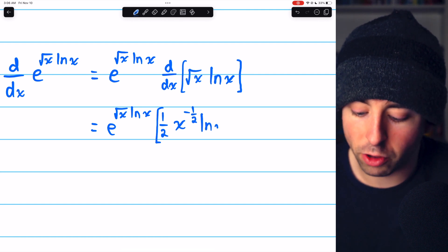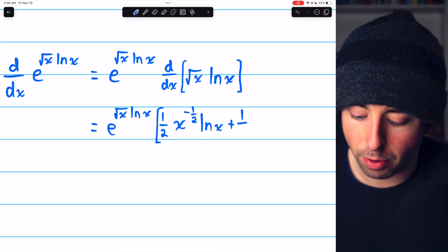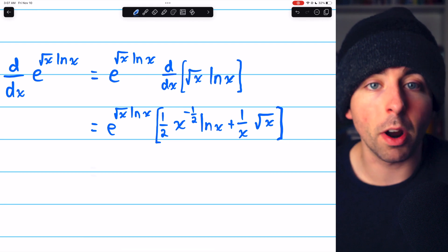And then we multiply that by g. If g is ln x, then g prime is one over x. So this is what we get after applying the product rule.